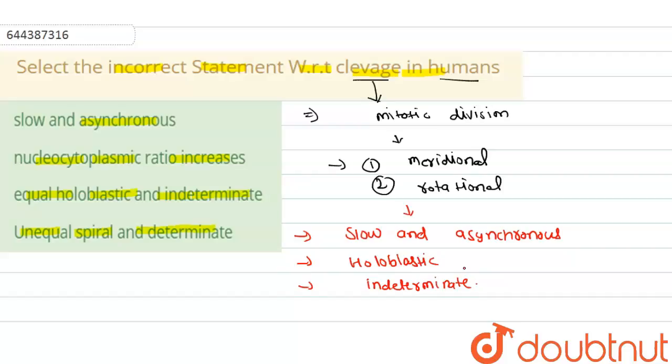If we talk about the options, first option is slow and asynchronous - that is correct. Nucleocytoplasmic ratio increases - that is also right because in mitotic division the number of cells will be increasing, and if the number of cells is increasing it means the ratio of cytoplasm to nucleus will increase, so that is also right. Equal holoblastic and indeterminate - that is also right.